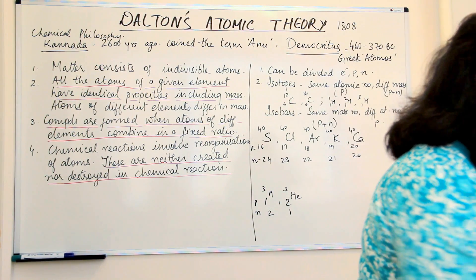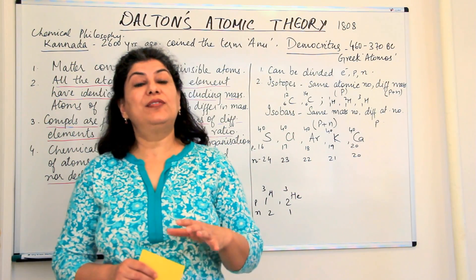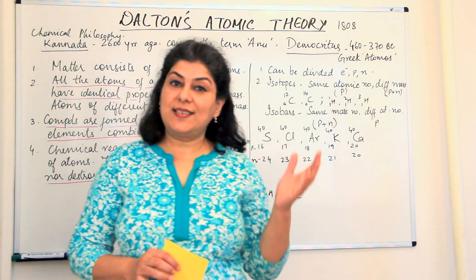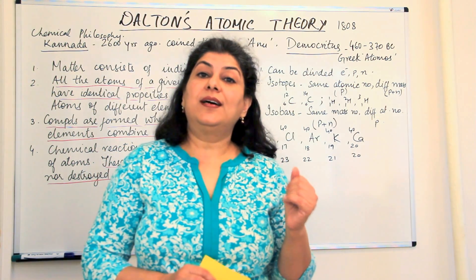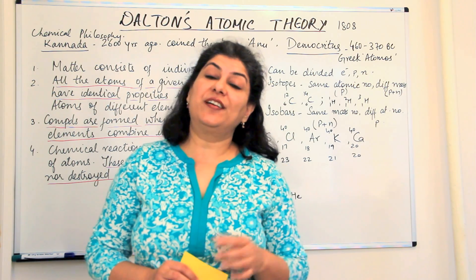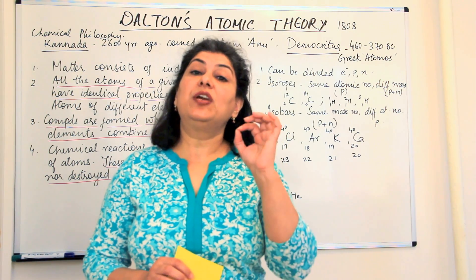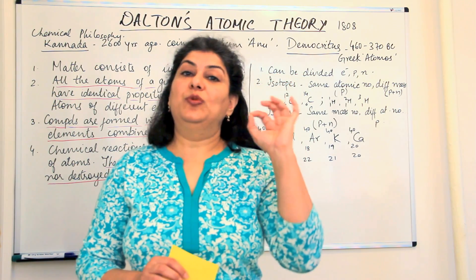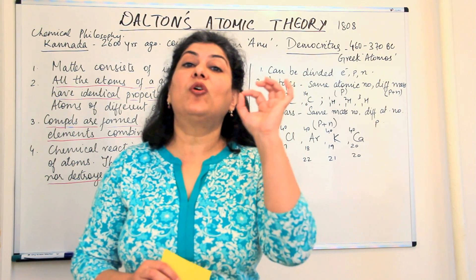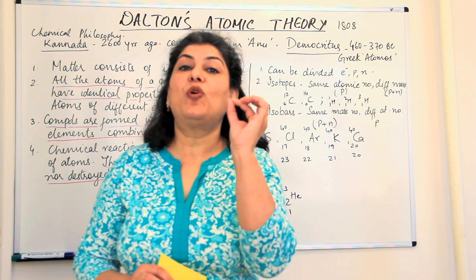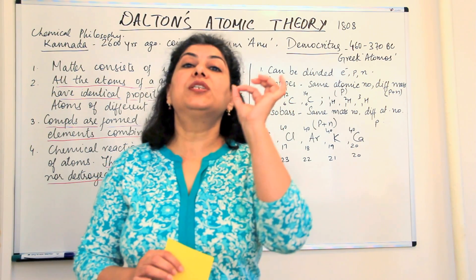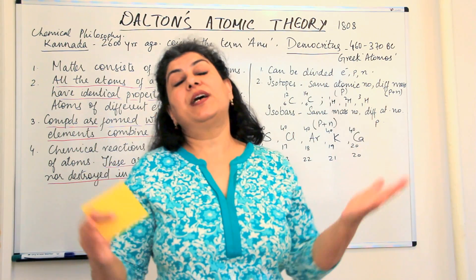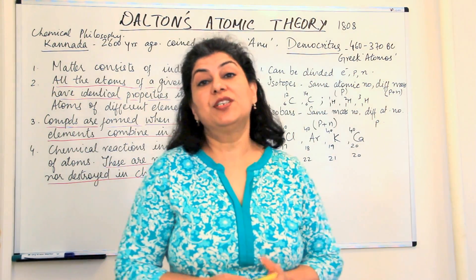The idea of atom was originally a philosophy. It is said that about 2600 years ago, a sage in India, sage Kannada, he proposed the term or he coined the term Anu or Parmanu, Param Anu, that is the smallest Anu or the smallest particle. He said that it is these Anu or the Parmanu with which the entire matter or the universe is made of.